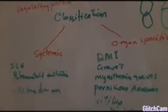Now we are going to classify autoimmunity. Autoimmunity may be systemic, meaning it involves more than one organ, or it may be organ-specific. For example, SLE for systemic autoimmunity.